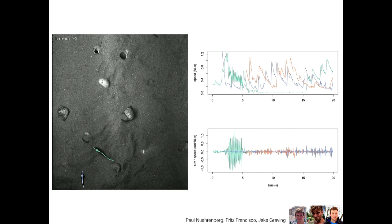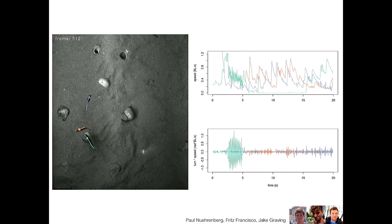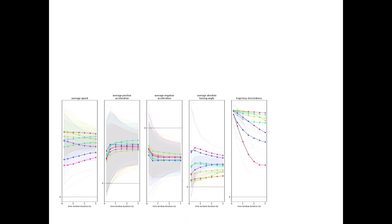The kinds of parameters we feed in are kinematic signatures based on the behavioral motion of each animal. You can see a quite clear signature in the green fish of that characteristic driving display it performed. We feed five parameters into these models: average speed, average positive acceleration, average negative acceleration, absolute turning angle, and trajectory directedness — a measure of path tortuosity. We're seeing how well they contribute to each one of these classes using dimensionality reduction with one-dimensional t-SNE space.